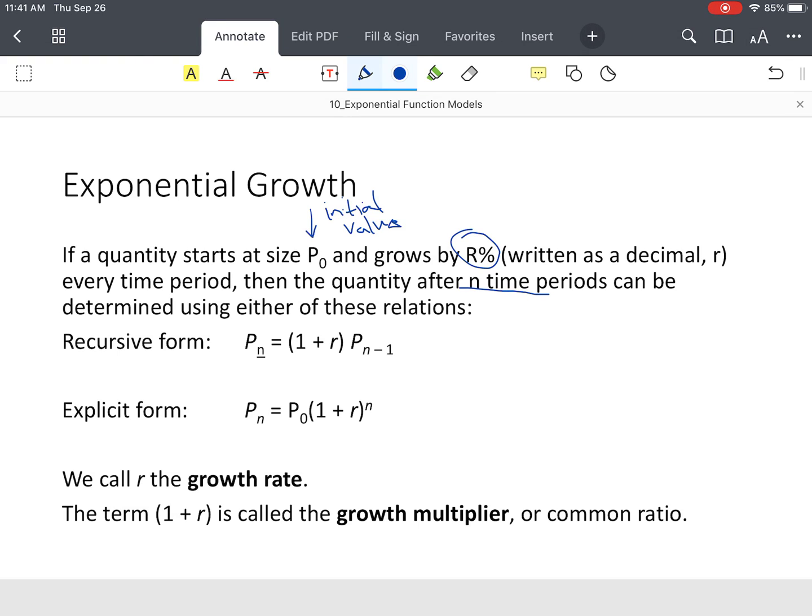So, you have what's called a recursive form, which is P sub N equals 1 plus R times the previous value. Now, since we're dealing with functions, we can actually change the explicit form to function form. So, we have P of N equals your initial value or your starting value, or P naught, times your growth multiplier raised to a certain amount of time, which is N. In some cases, they may use T instead of N. And then, in some cases, they'll give you the growth multiplier. You won't have to do 1 plus R. So, R is your growth rate. 1 plus R is your growth multiplier.